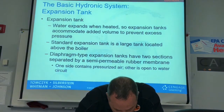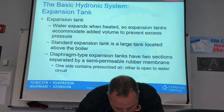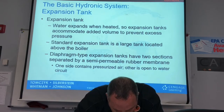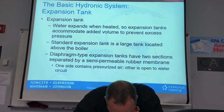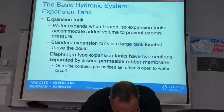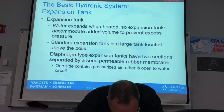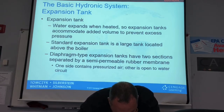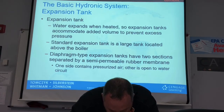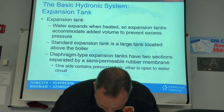The second type is the diaphragm tank, which has a rubber semi-permeable membrane inside its shell. One side contains pressurized air and the other side is open to the water. The air portion is pre-charged at the factory — normally up to 12 PSI for residential use. The tank pressure is noted on the nameplate of the tank itself, shown in figure 33.15.